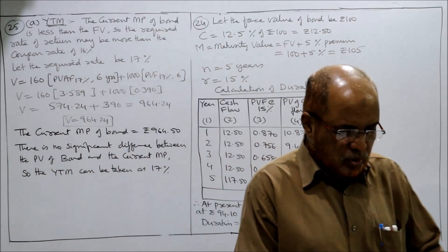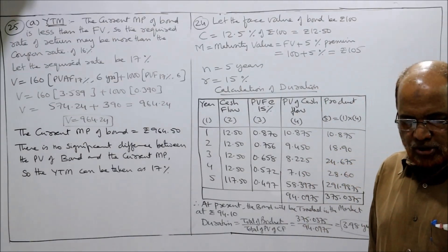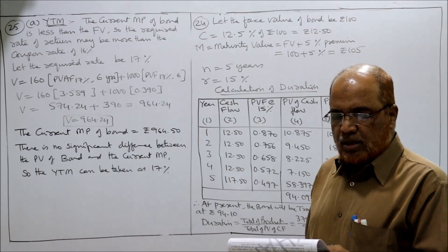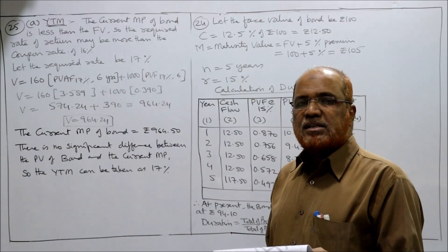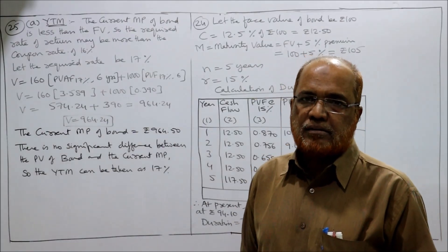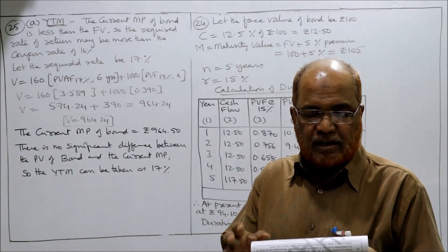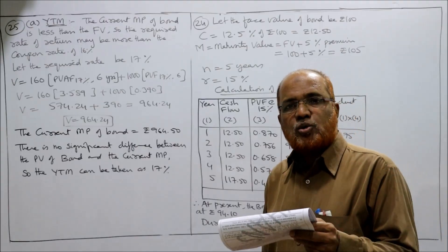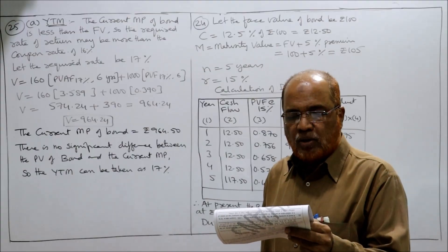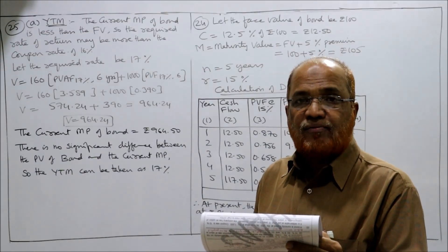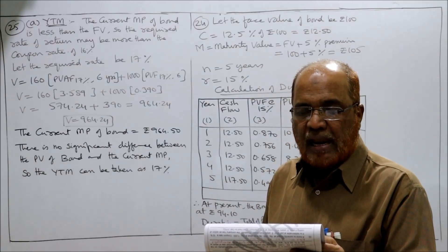Now the 25th problem. The following data is available for a bond: face value 1000, coupon interest rate 16% payable annually, so every year 16% of 1000 = 160 rupees coupon interest is paid. Years to maturity: 6 years. Redemption value (maturity value): 1000. Current market price is 964.5. We need to find the yield to maturity, duration, and volatility of this bond.